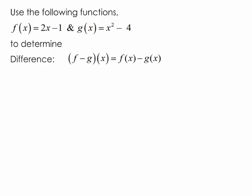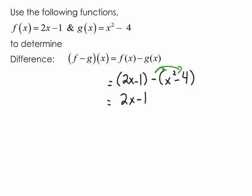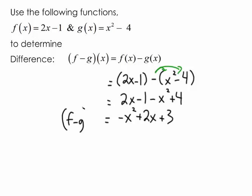The same idea applies for the difference. We take f of x, which is 2x minus 1, and this time subtract g of x, which is x squared minus 4. Be careful with positives and negatives — we must distribute that negative into the second bracket, giving us negative x squared plus 4. Combining like terms, we get negative x squared plus 2x plus 3. That is our function f minus g of x.